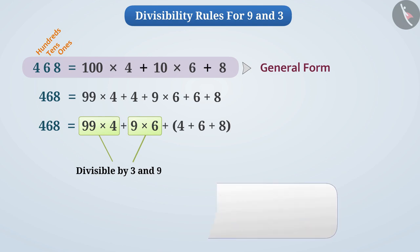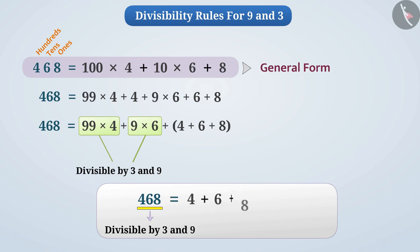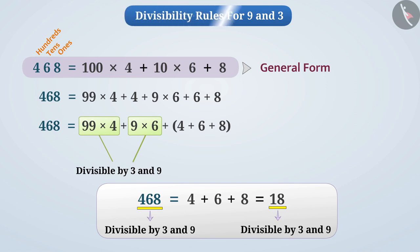Hence, the number 468 will be divisible by 3 or 9 only when the sum of all its digits — that is, the sum of 4, 6 and 8 — is divisible by 3 or 9. Here, their sum is 18, which is divisible by both 3 and 9. So, the number 468 is also divisible by both 3 and 9. This is true for all numbers, and in this way, the divisibility by 3 or 9 can be checked by looking at the sum of the digits.